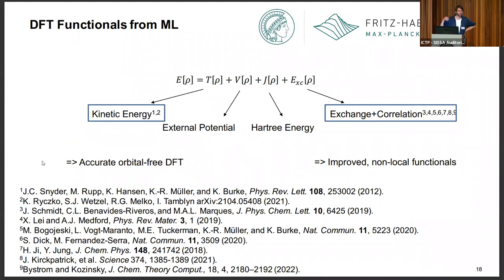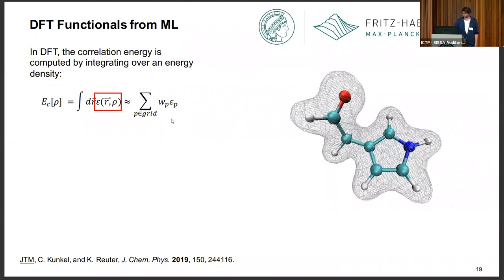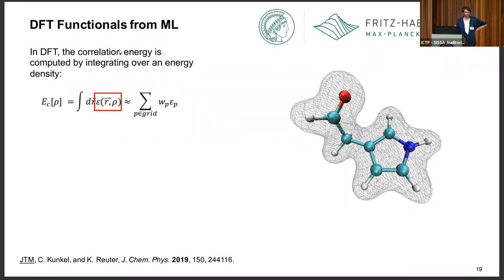The other big opportunity is if you do Kohn-Sham DFT, so you get the bulk of the kinetic energy from your orbitals, then you can focus on the exchange and correlation — the remaining unknowns. This potentially gets you improved non-local functionals, and we also found you can make functionals cheaper in this way. I'm going to talk about this now. The correlation energy is the smallest part of the total energy — we have 99% of the energy taken care of and we're just predicting that final missing one percent — but it's also the most expensive part to calculate exactly, which is why it's a very worthy target for machine learning.